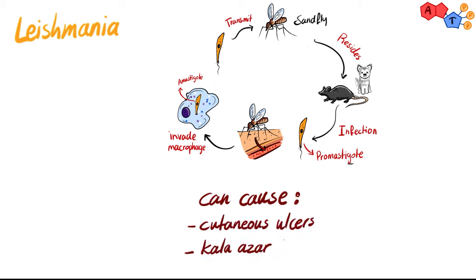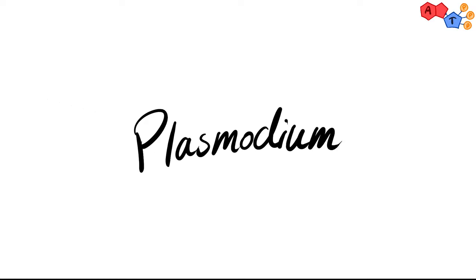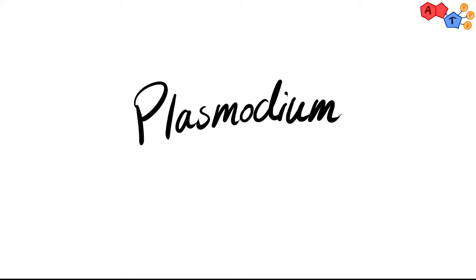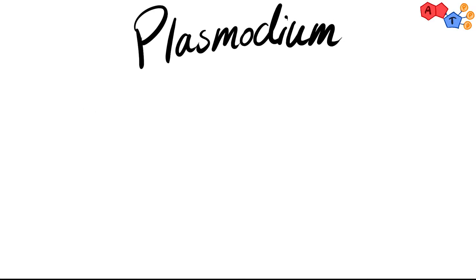There are several disease manifestations accompanying Leishmania infection, such as cutaneous ulcers and kala-azar. Kala-azar is a severe form of the infection and symptoms usually include enlargement of the liver and spleen, making it quite life-threatening.